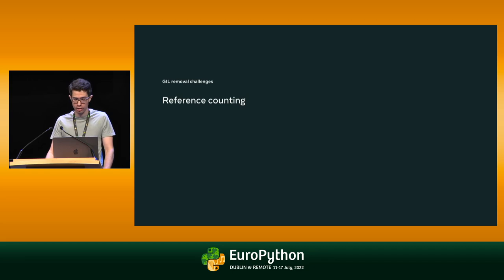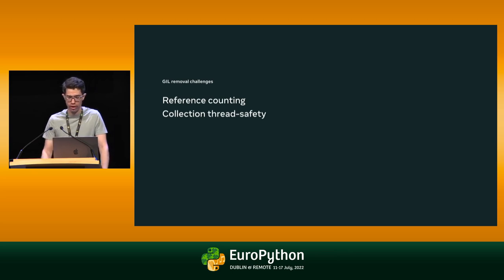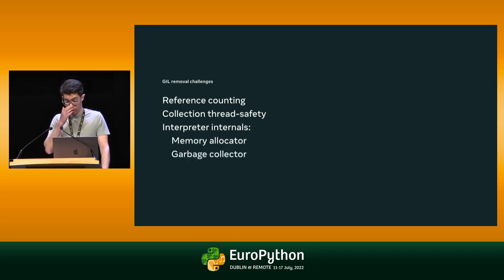Removing the global interpreter lock is a challenge because besides the actual removal of the lock, you have to make Python safe to run with multiple threads. You have to address things like reference counting — Python primarily manages memory by keeping track of the number of references to each object, and the current implementation isn't thread-safe without the GIL. You also have to handle concurrent accesses to Python's collections like dictionaries, lists, and sets. Once you remove the GIL, concurrent modifications to dictionaries would crash the interpreter. There are many other internal components that need to be made thread-safe, including Python's built-in memory allocator and the cyclic garbage collector.